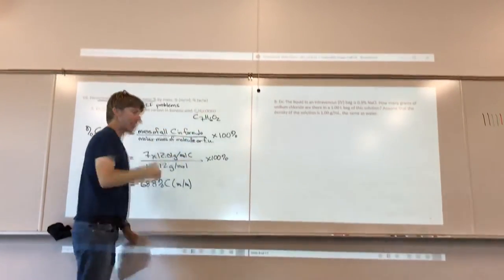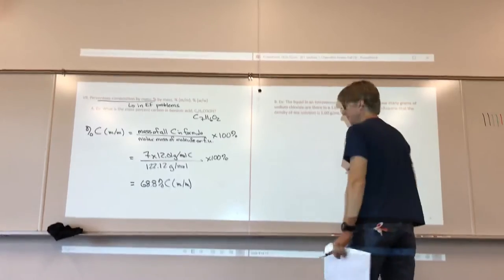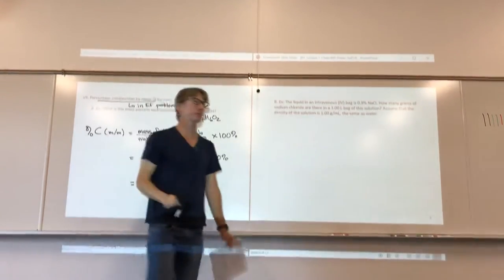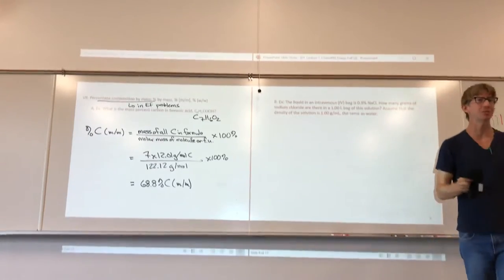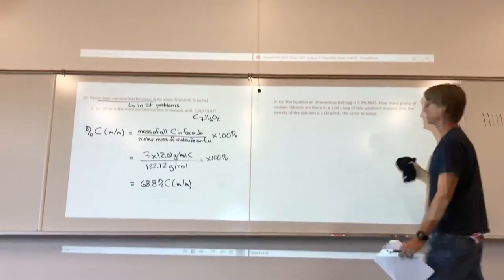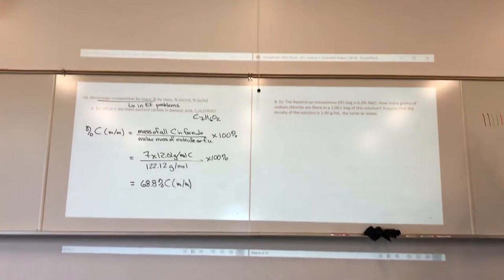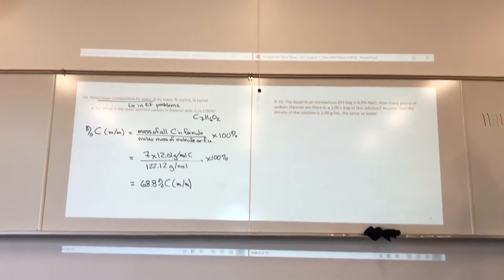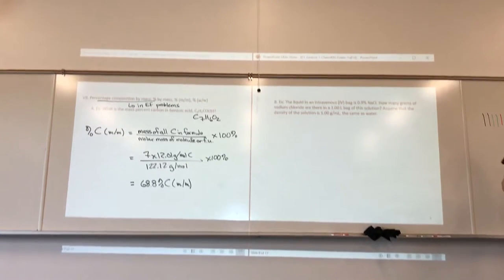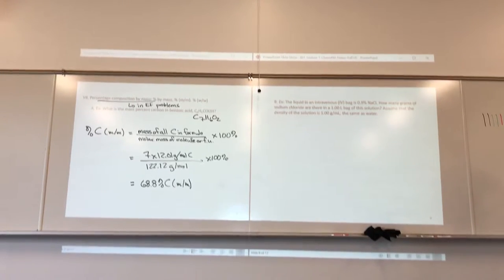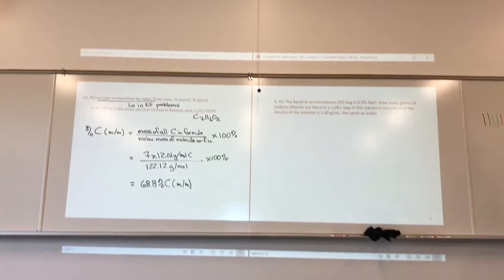What is W/W — weight by weight? At least in our Earth-centric model, mass and weight are always proportional. In this example, the liquid in an intravenous IV bag is 0.9% sodium chloride. How many grams of sodium chloride are there in a 1.00 liter bag of this solution? Assume the density of the solution is 1.00 grams per milliliter, the same as water. How many people already knew the density of water is 1.00 grams per milliliter? Memorize that — it will be very handy.